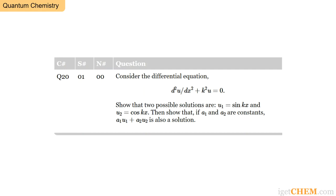This problem says: consider the differential equation d²u/dx² + k²u = 0. Show that two possible solutions are u₁ = sin(kx) and u₂ = cos(kx). Then show that if a₁ and a₂ are constants, a₁u₁ + a₂u₂ is also a solution.